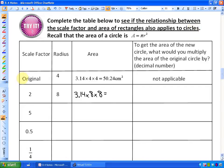Now here's the idea. We have an original circle with a radius of 4. If you need a diagram, here's what it is. The area of a circle is pi r squared, so it's 3.14 times 4 times 4, which is 50.24 centimeters squared.